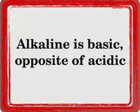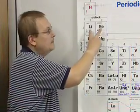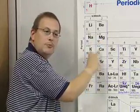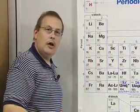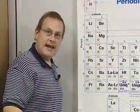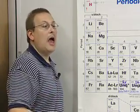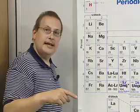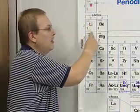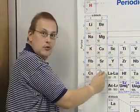The word alkaline means basic — it's the opposite of acidic. So instead of saying you've got an acid and a base, you could say you've got an acid and an alkaline, because alkaline means base. What that means is that when you put these metals into water, you get a base and hydrogen as a byproduct. I'm going to demonstrate the difference in reactivities between Group 1 metals and Group 2 metals.